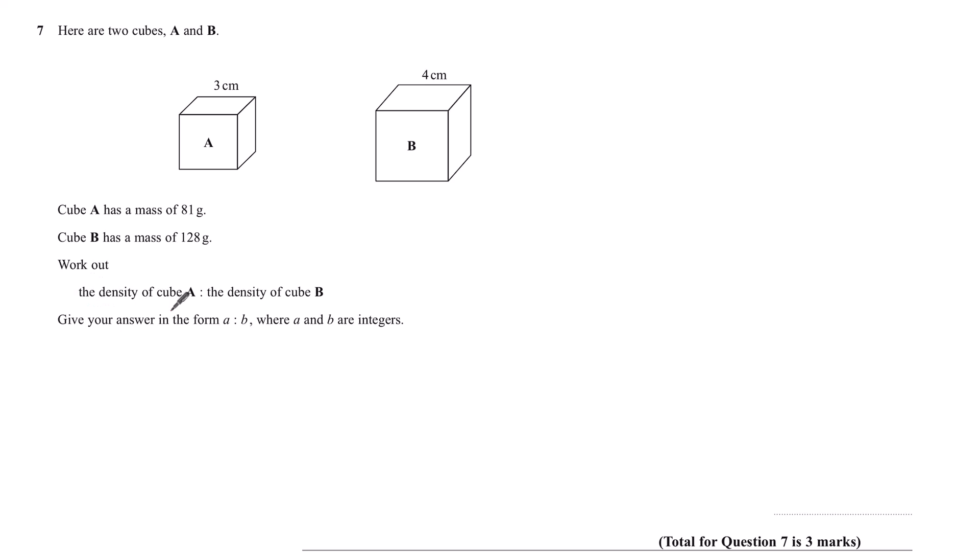Work out the density of cube A to the density of cube B, giving your answer in the form A to B, where A and B are integers.